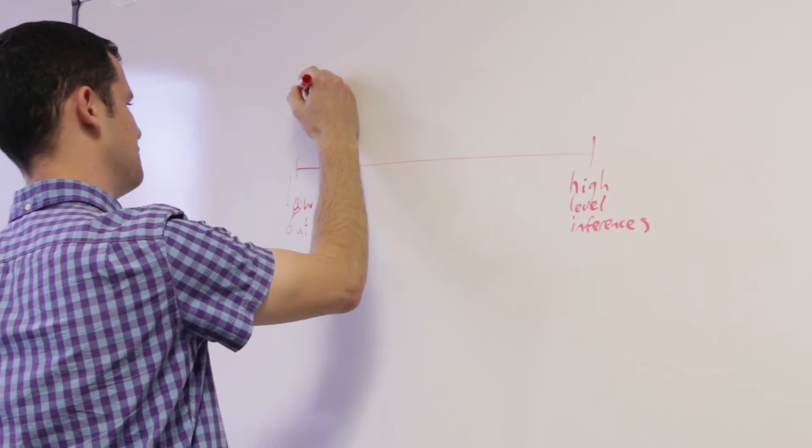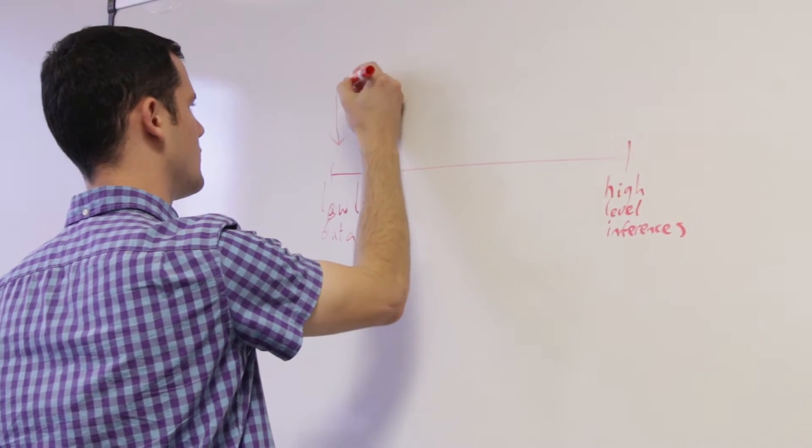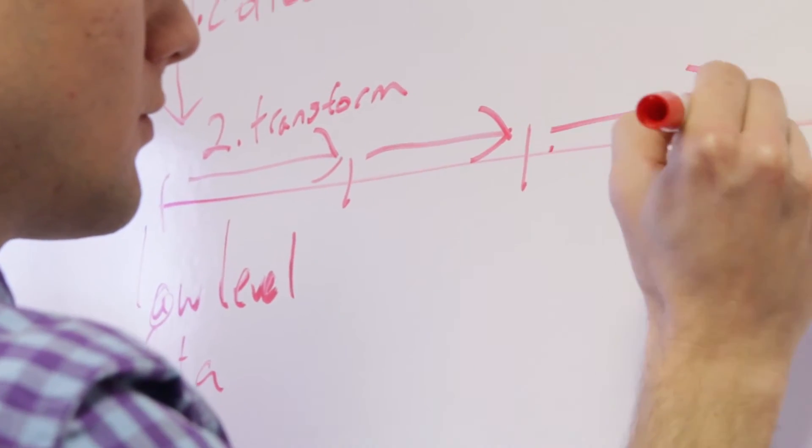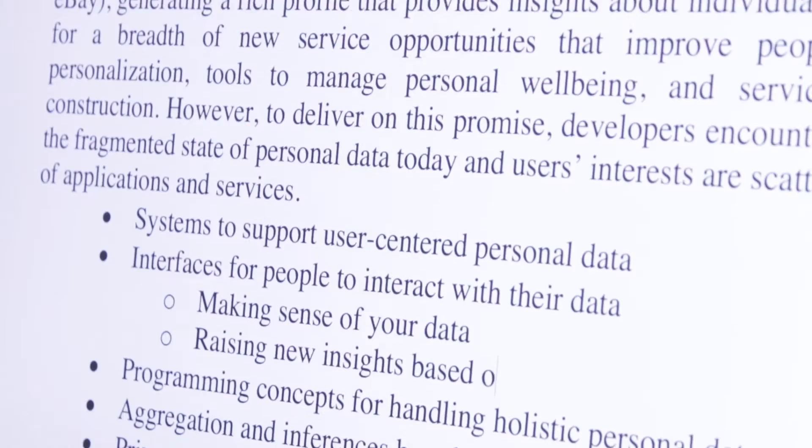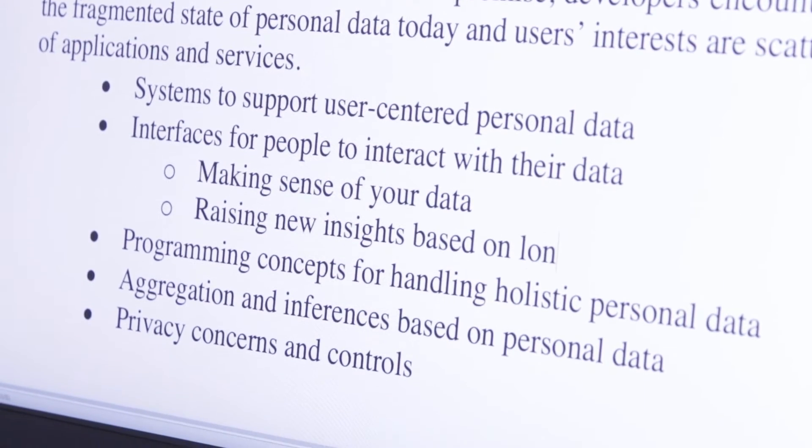In general, human-computer interaction research is about looking at how people and technology come together. Specifically, the research that I do is focused on personal data and looking at this idea of personal data from the perspective of an individual user rather than from the perspective of a company.